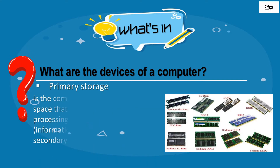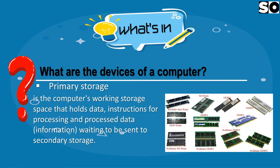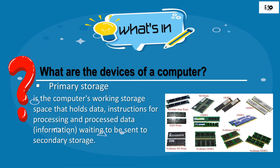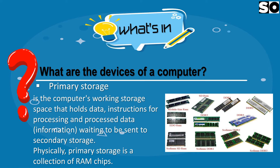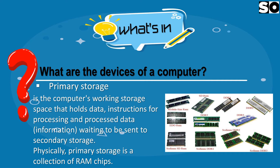Primary Storage is the computer's working storage space that holds data, instructions for processing, and processed data — information waiting to be sent to secondary storage. Physically, primary storage is a collection of RAM chips.